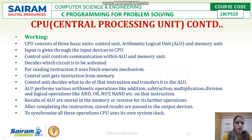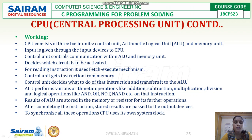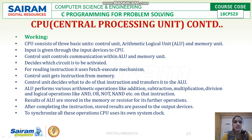If arithmetic and logical instructions are required, they are transferred to the ALU. The ALU performs arithmetic operations like addition, subtraction, multiplication, and division, and logical operations like AND, OR, NOT, and NAND. Results from the ALU are stored back in memory or registers for further operations. After completing instructions, stored results are passed to the output device. To synchronize all these operations, the CPU has its own system clock that controls what instruction executes at what time and what data is transferred between units.